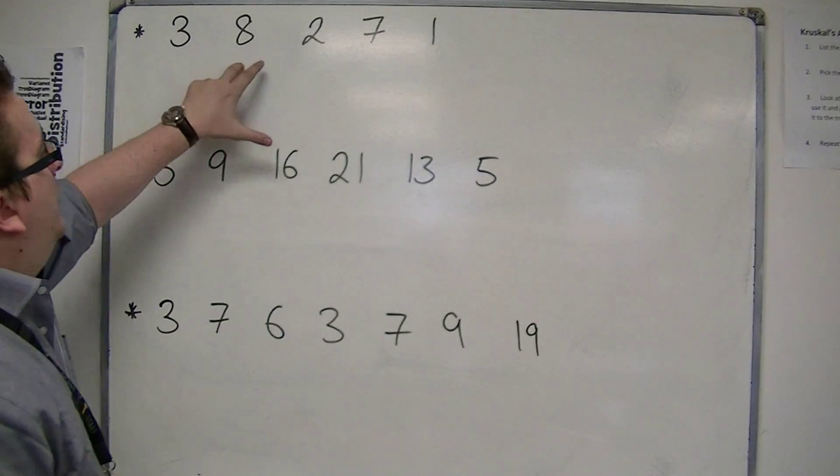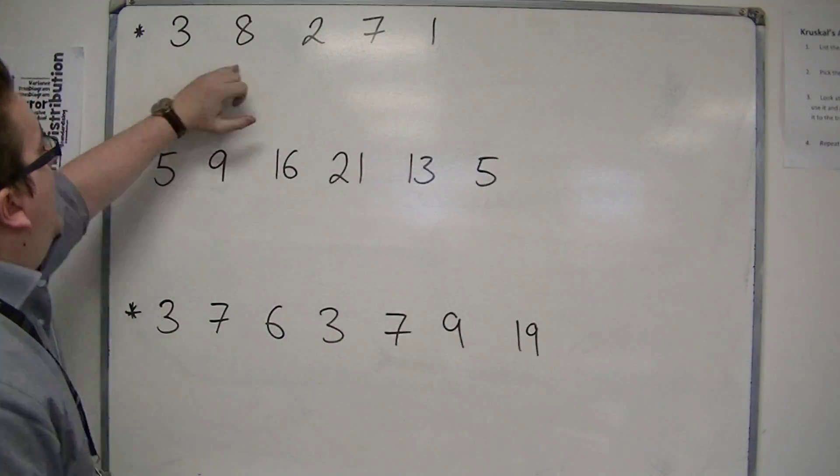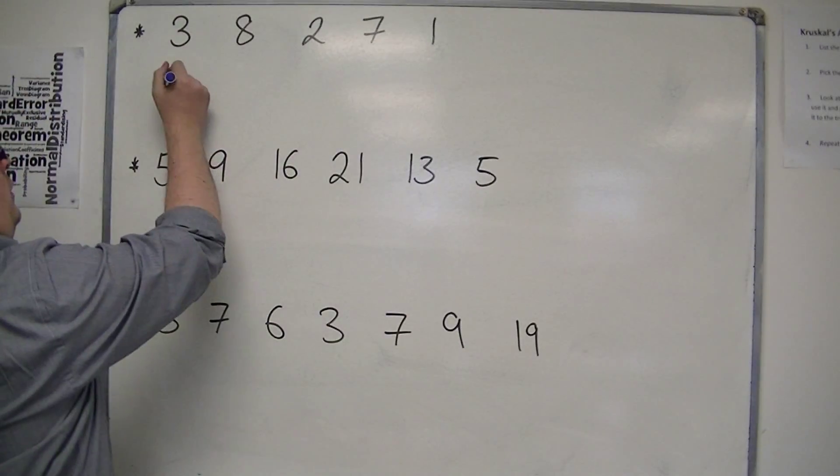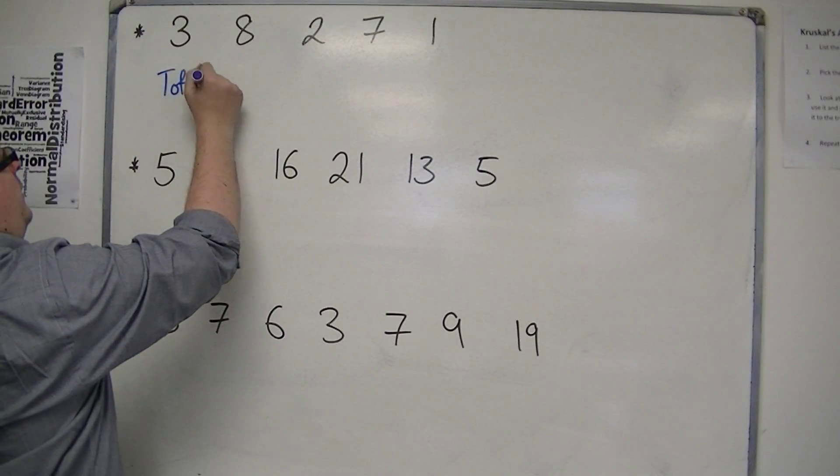So 3 plus 8 plus 2, so we've got 11, 13, 20, 21. So the total is 21.